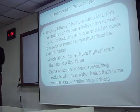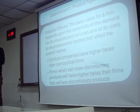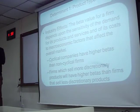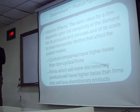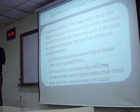Can anybody give me an example of a non-discretionary product? Rice. Water. Bread. Potatoes. Clothes. Milk. These are all examples of non-discretionary products — things people buy regardless of economic conditions.